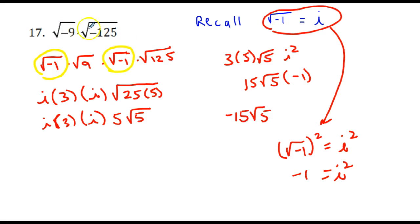One thing you want to be sure of is that you don't multiply these numbers together first. Because if you do that, your final answer would not be negative 15 times the square root of 5, it would be positive 15 times the square root of 5. So make sure you simplify the imaginary components first.